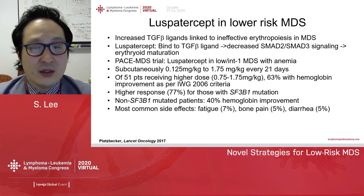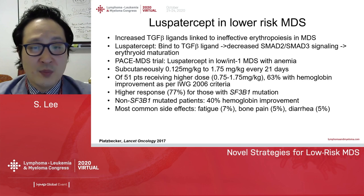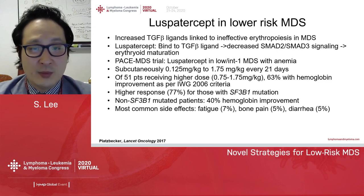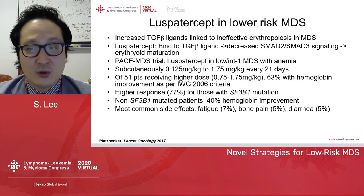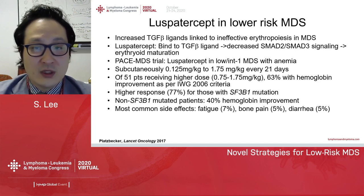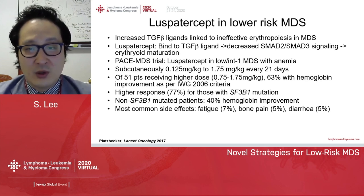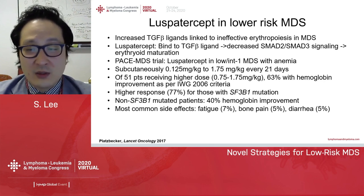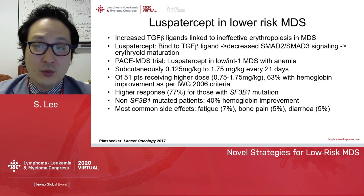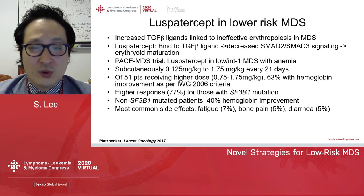Increased TGF-beta ligand is linked to ineffective erythropoiesis in MDS. Luspatercept is a novel drug that has recently been approved that binds to TGF-beta ligand, which leads to decreased SMAD2/SMAD3 signaling, leading to erythroid maturation. Luspatercept was initially tested in low and intermediate-1 MDS patients with anemia. Of 51 patients receiving higher dose luspatercept, ranging between 0.75 to 1.75 mg per kg, 63% achieved transfusion improvement per IWG 2006 criteria. Higher response of about 77% was seen in patients with SF3B1 mutation, and for those without SF3B1 mutation, hemoglobin improvement occurred in 40% of patients. Most common side effects were fatigue, bone pain, and diarrhea.